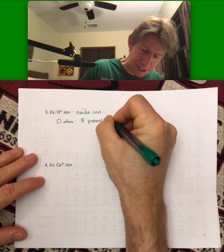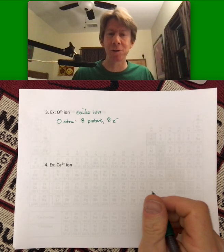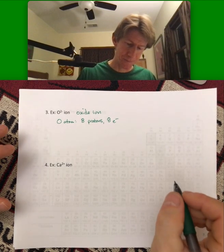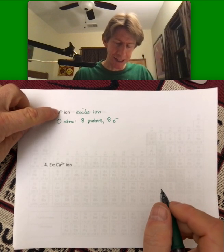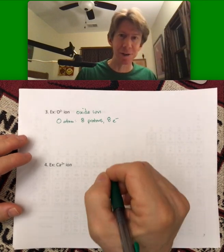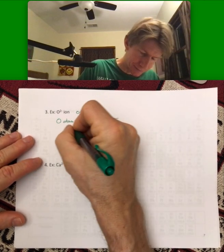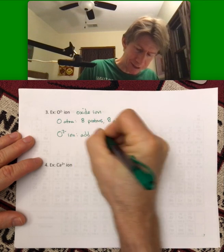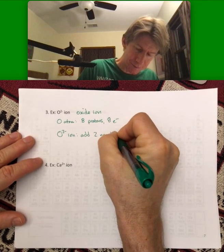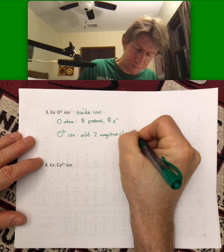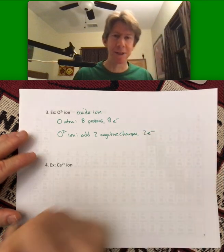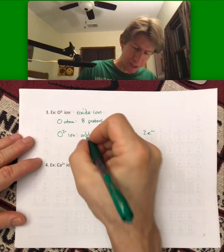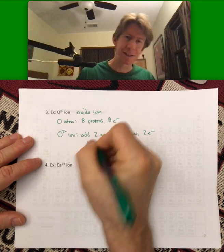8 protons. 8 electrons. We know that they're always the same because it's always neutral. Protons, positive. Electrons, negative. Cancel out. Now, it's 2 minus. That means we're going to have to add 2 negative charges. So, O2 minus ion. Add 2 negative charges. That means add 2 electrons. We have 10 electrons for that.